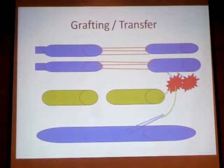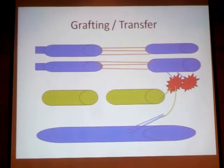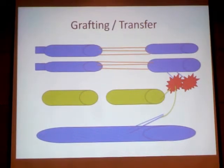With nerve grafting, we have an injury and we bridge between the proximal nerve and the distal nerve using cable grafts. The cable graft is typically a sural or any sensory nerve. We use cable grafts to bridge the gap so that the motor signal can travel across.